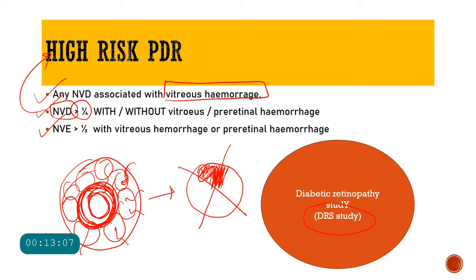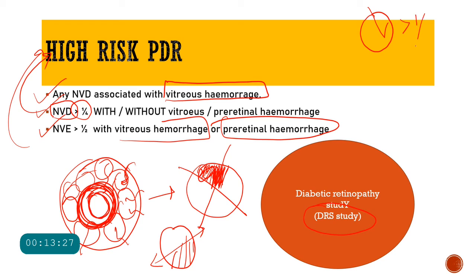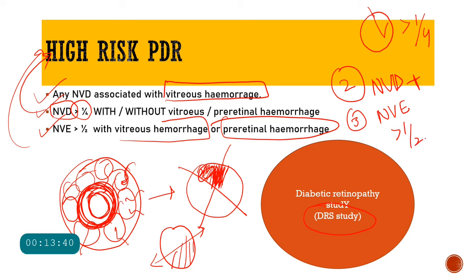For neovascularization elsewhere (NVE), the area must be more than half of the disc area and must be accompanied by vitreous hemorrhage or pre-retinal hemorrhage to be classified as high-risk PDR. So NVE always requires vitreous hemorrhage; simple NVD requires vitreous hemorrhage unless the NVD itself is greater than one-fourth of the disc area, in which case no vitreous hemorrhage is needed.